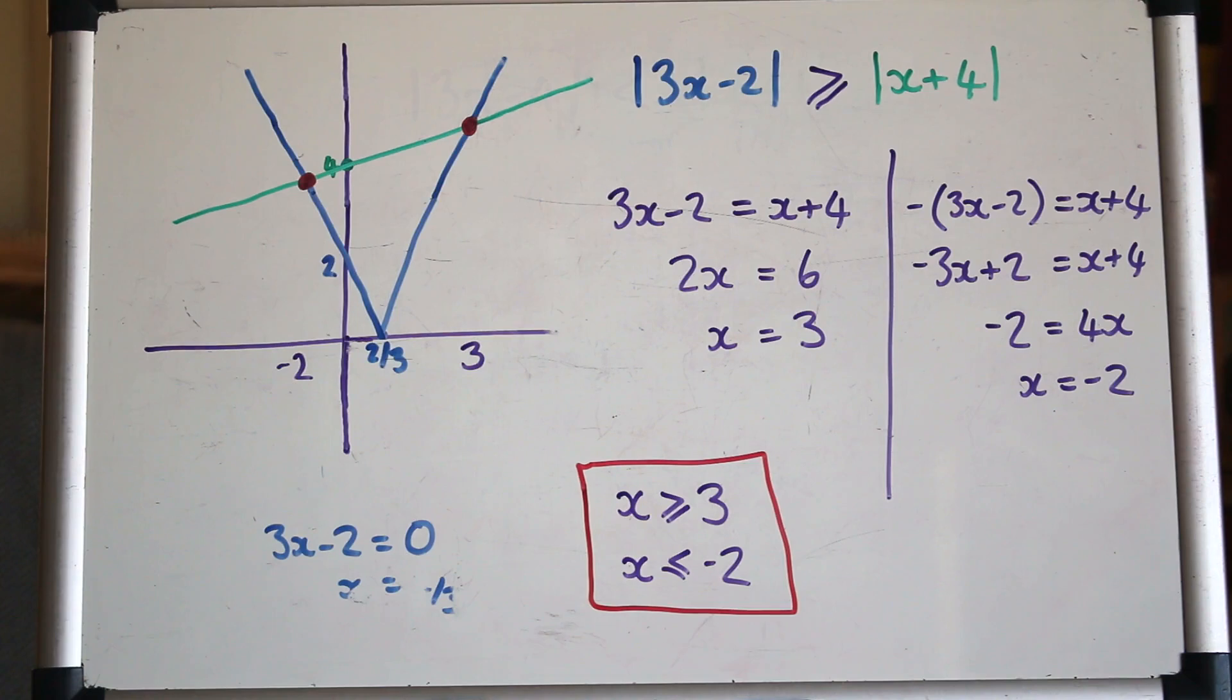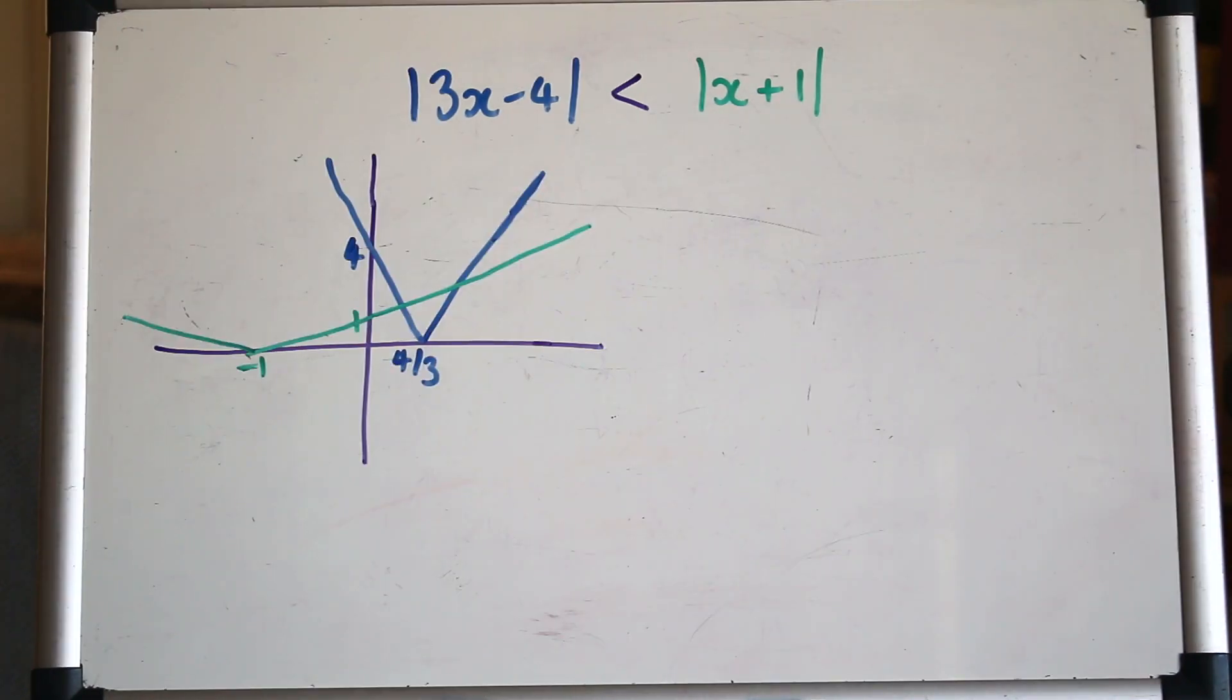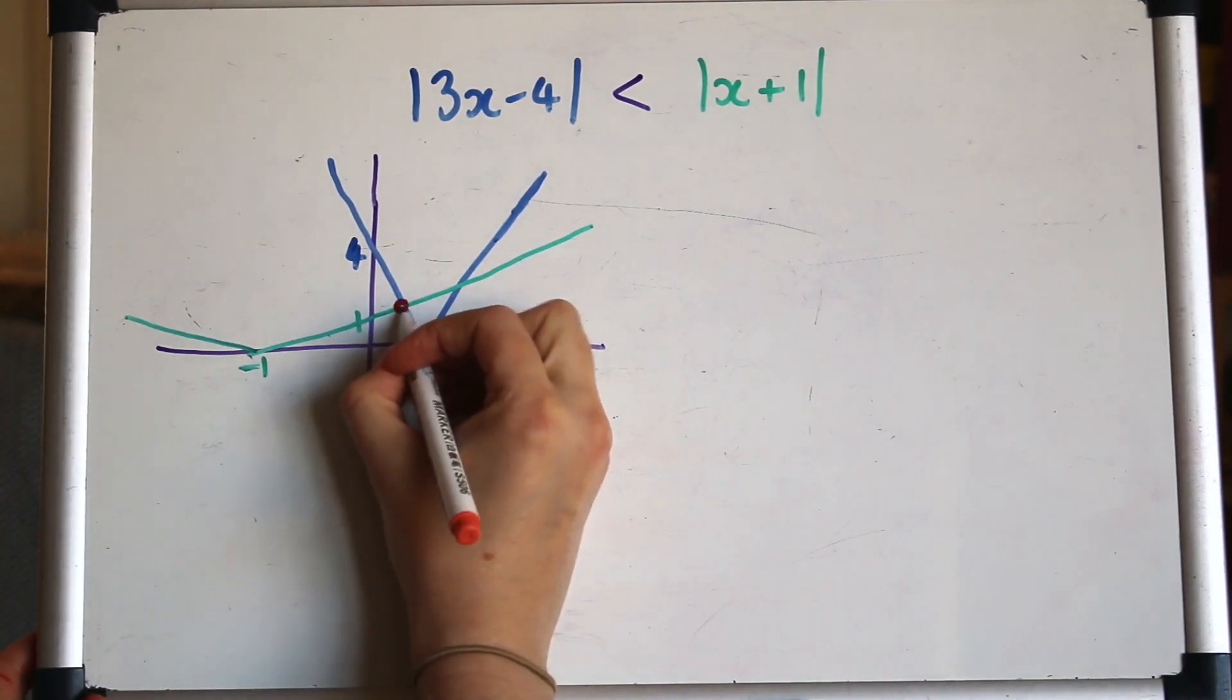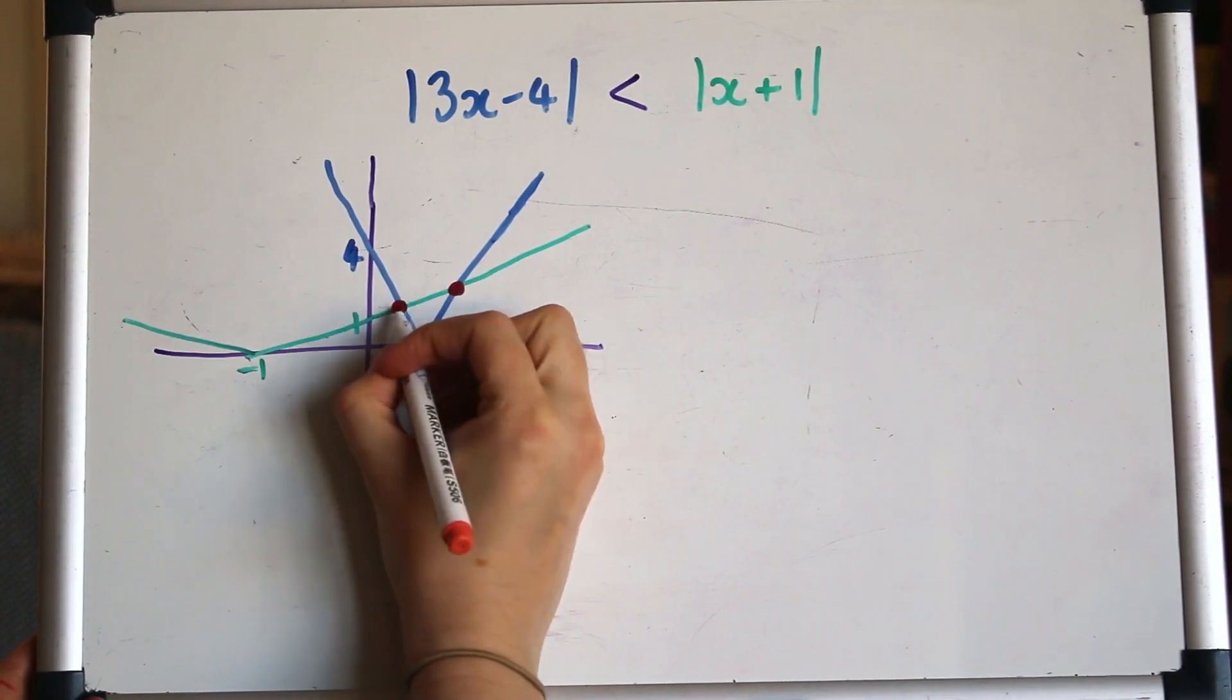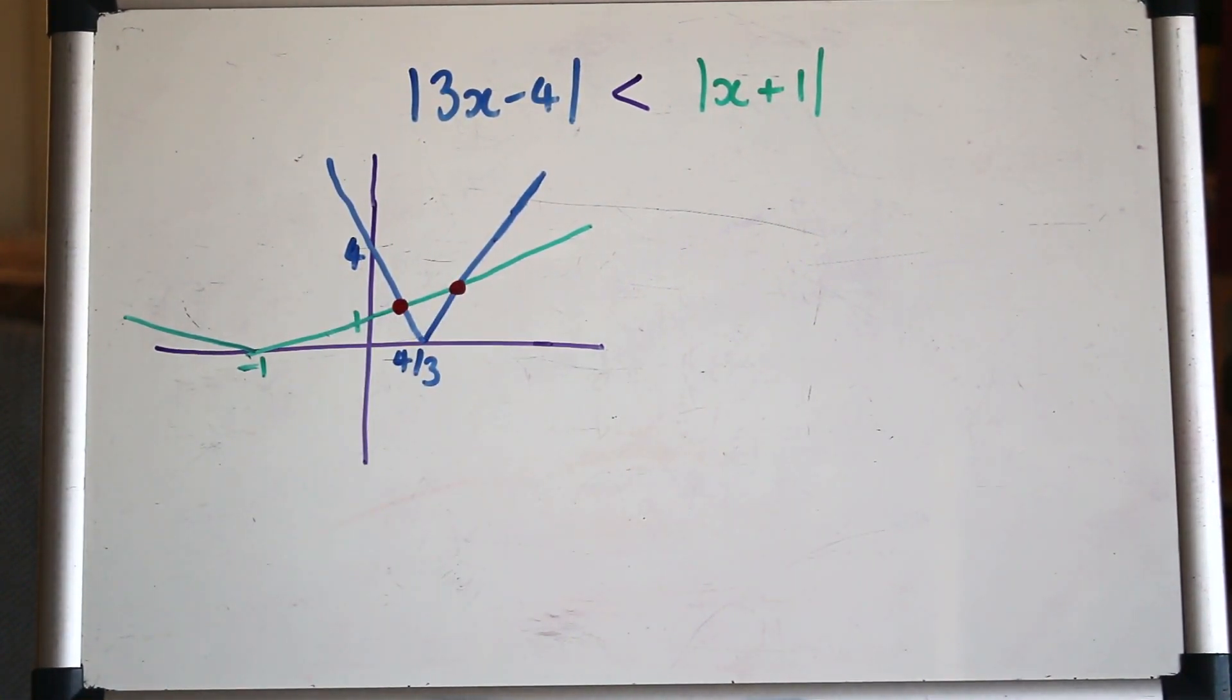Let's try another one of those. Let's try another inequality, and we'll do the same. We'll sketch the graph first. So I've sketched those two graphs again in blue and green, and these points here will be the points for our inequality, so we need to find where they cross.